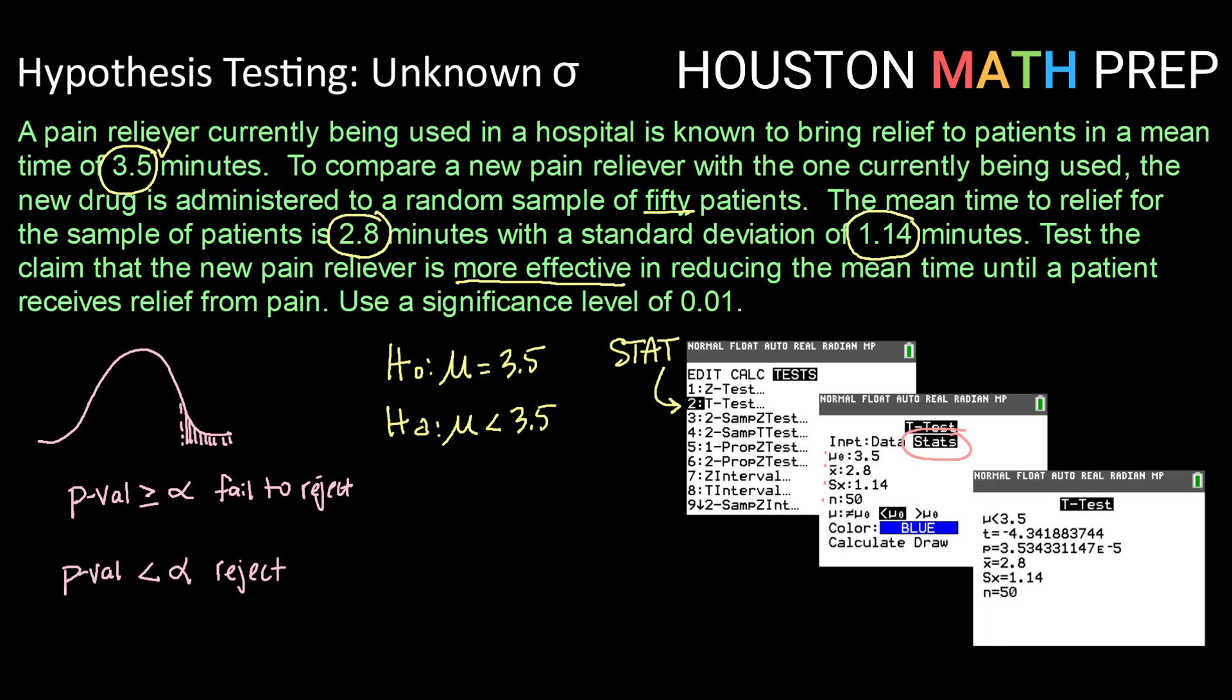So our μ₀ is our μ in our null hypothesis, in this case 3.5. x̄ is the mean for our sample, in this case 2.8. Sₓ is the standard deviation of our sample, in this case 1.14. And n is the number in our sample, in this case 50.